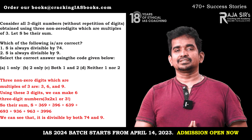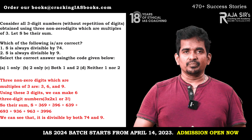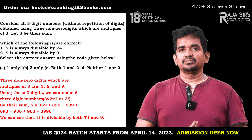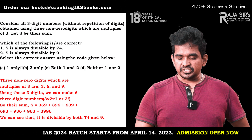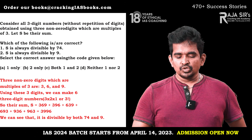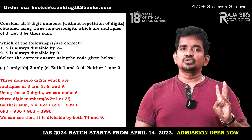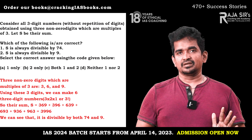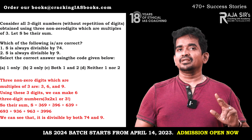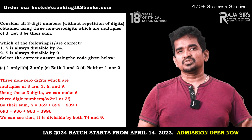Now we have to find the sum S of these six numbers: 369, 396, 639, 693, 936, 963. Instead of adding one by one, let's do it in a smarter way. First, count all the hundreds: there are two 300s (600), two 600s (1200), and two 900s (1800). So 1800 + 1200 + 600 = 3600 from the hundreds place.